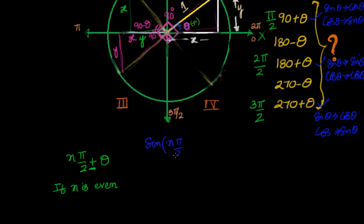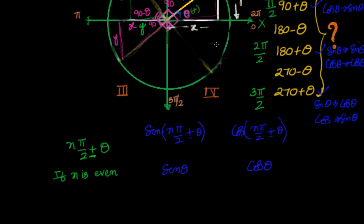For n·π/2 plus or minus theta: if n is even, sine of this will remain as sine, and cosine will remain as cosine. We are not talking about the sign here — the sign will be decided based on the quadrant we are in. Whereas if n is odd, sine will become cosine, and cosine will become sine. This is the general formula which we can apply.